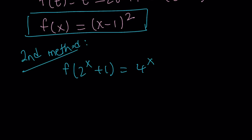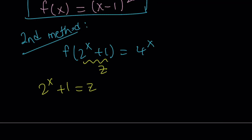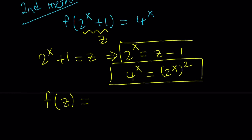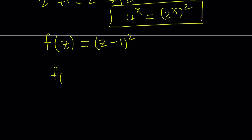Our goal is to get f of x, f of t, or f of z. So why not replace 2 to the power x plus 1 with z? This means 2 to the power x plus 1 equals z, and from here we isolate 2 to the power x, which equals z minus 1. The right-hand side, 4 to the power x, can be written as 2 to the power x, squared. Since 2 to the power x equals z minus 1, we replace 4 to the power x with z minus 1, quantity squared. So f of z equals z minus 1 quantity squared, and replacing z with x gives us f of x equals x minus 1, quantity squared.